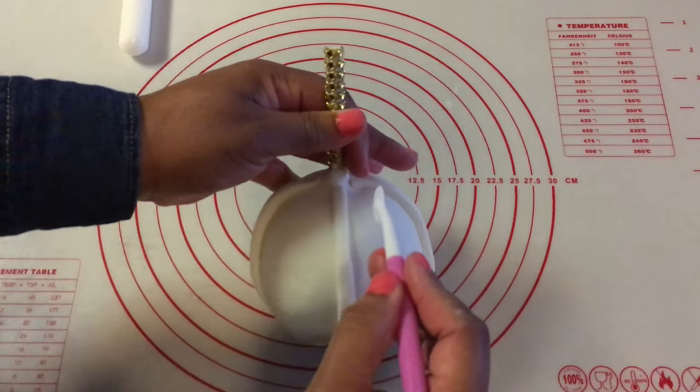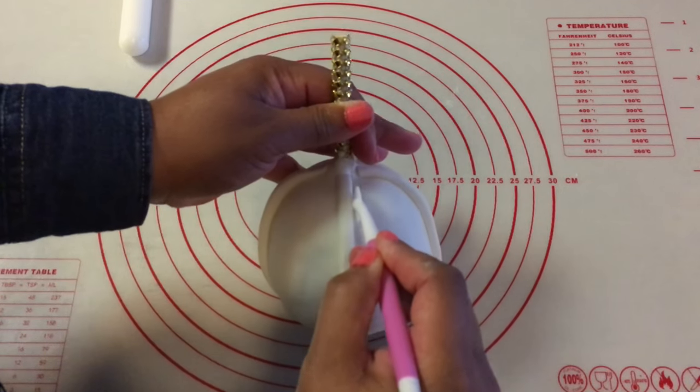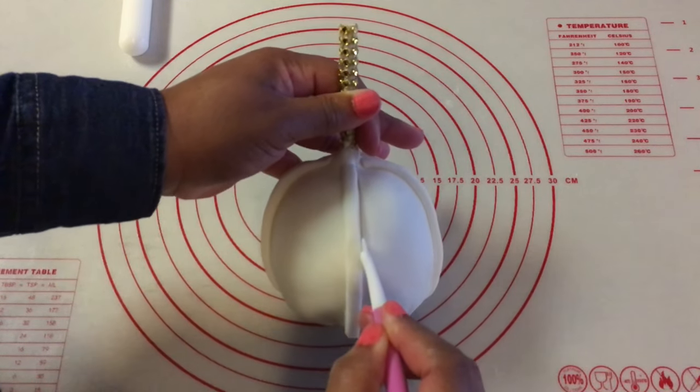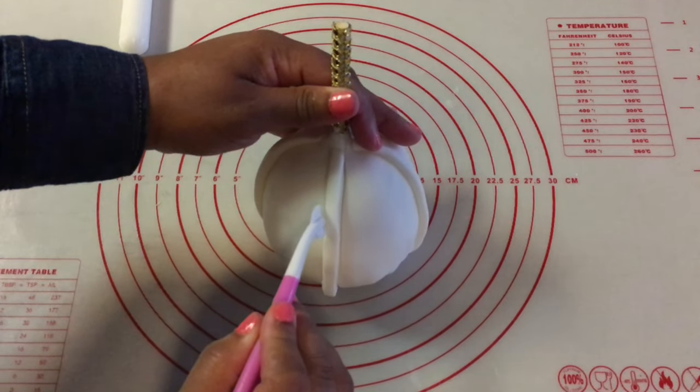Now I am just taking my fondant wheel to make the seams in the hat on the sides of the strips. And then you will see me take this same fondant wheel and go down the middle of the strip.